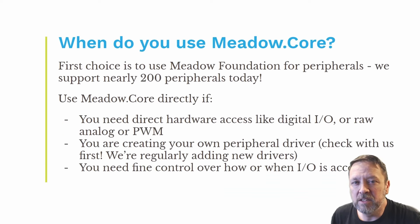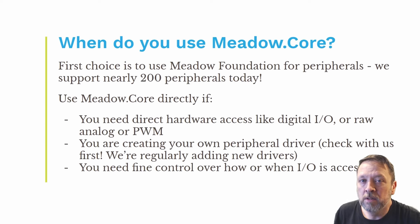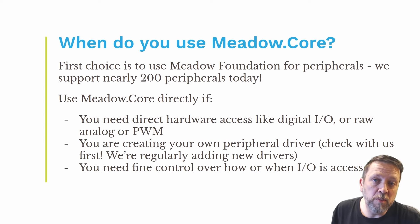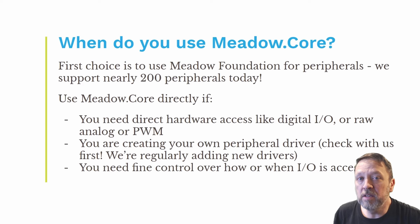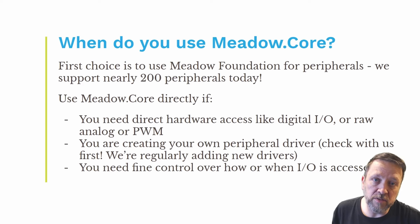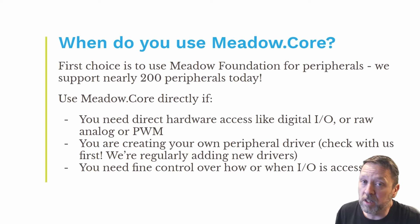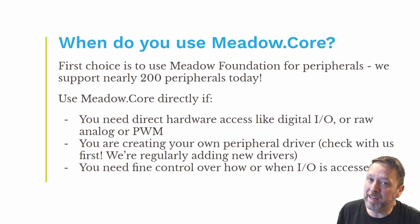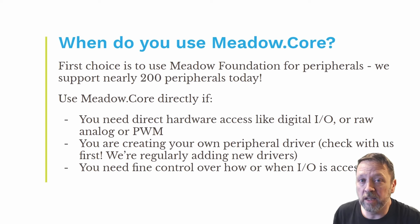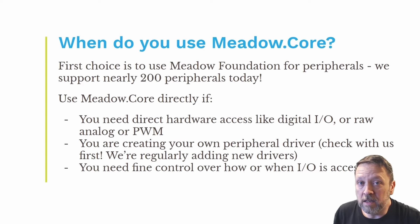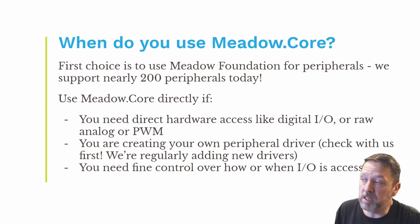So when exactly do you use MeadowCore? Adrian spoke about MeadowFoundation, and that is typically the first choice as an application developer. MeadowFoundation supports nearly 200 peripherals today and we're constantly growing that. But if you need to do something like direct hardware access — like a digital IO, raw analogs, PWMs, things like that — then going direct to MeadowCore is what you're going to need to do.